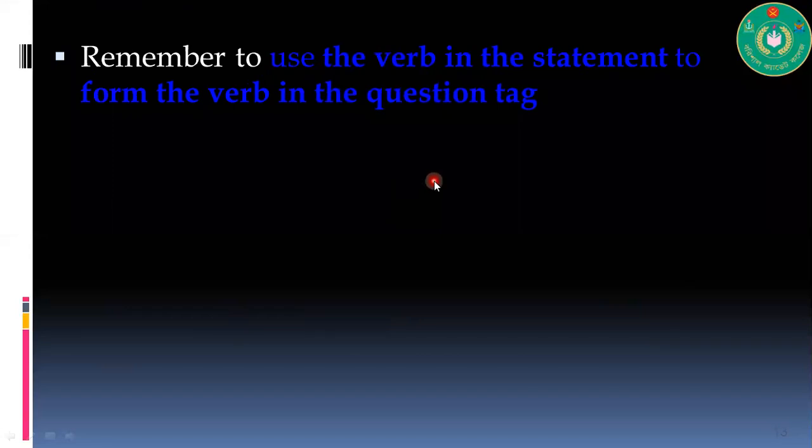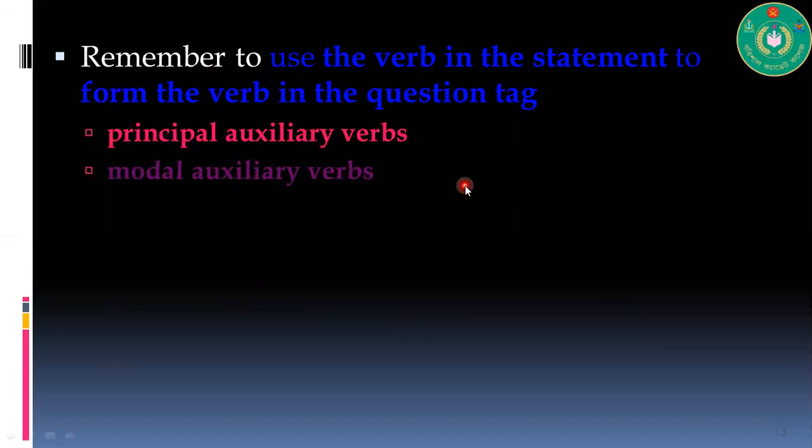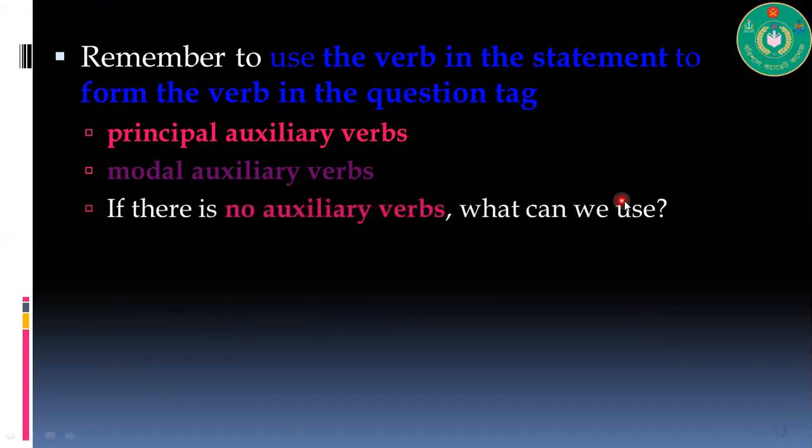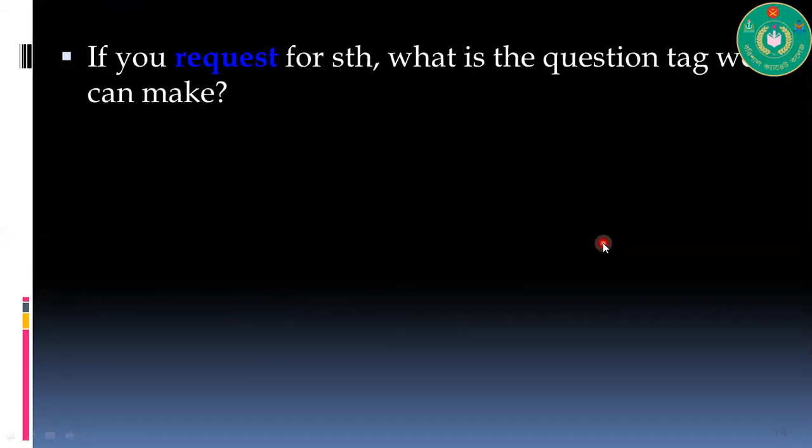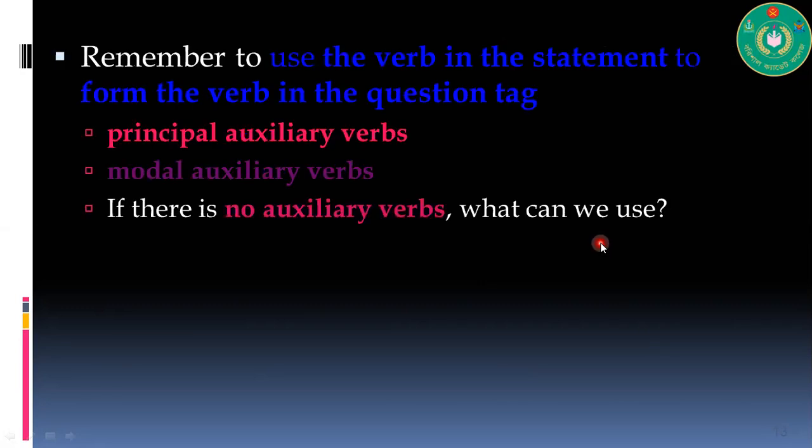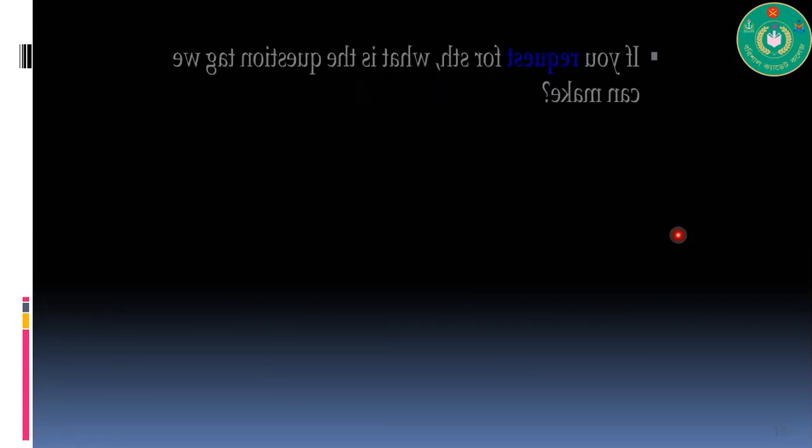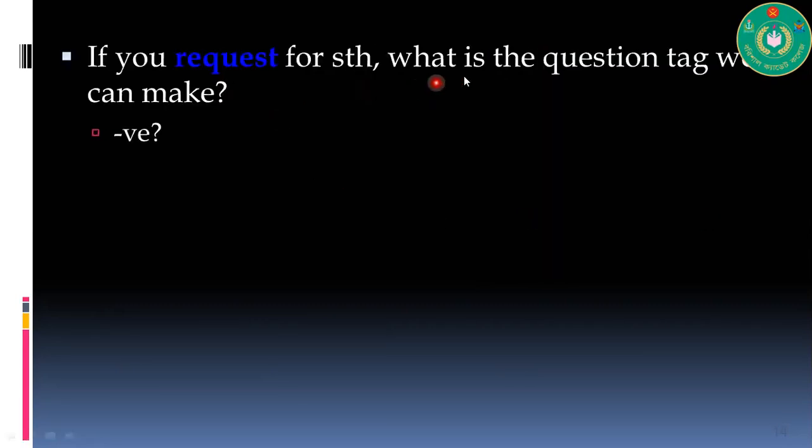Remember to use the verb in the statement to form the verb in the question tag. Principal auxiliary verbs, modal auxiliary verbs - if there is no auxiliary verb, we can use 'do'. If we request for something, the tag question can be negative or positive for making requests.